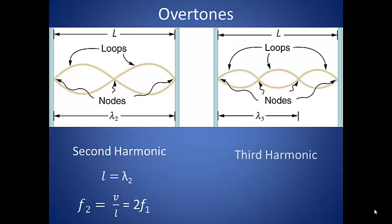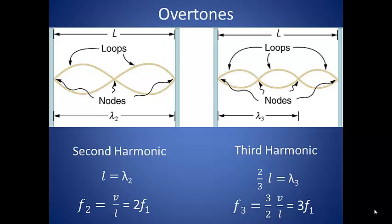The third harmonic, or the second overtone, can be figured in the same way. There are three loops in one length of string, so one complete wave occurs in two-thirds of the length of the string. This gives us the third harmonic frequency as three-half the velocity divided by the length of the string, or three times the original frequency.